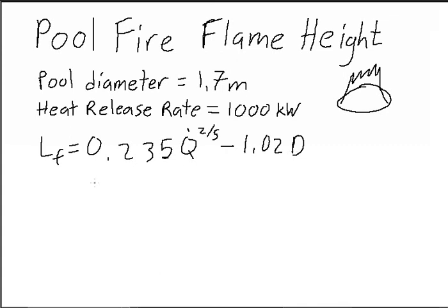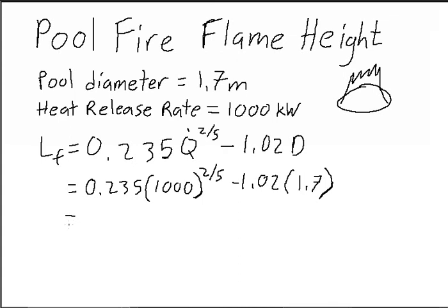where Q dot is your heat release rate. So, we can work this out, pretty straightforward, 0.235 times 1,000 to the two-fifths power, minus 1.02 times 1.7, and that's equal to 1.99 meters.